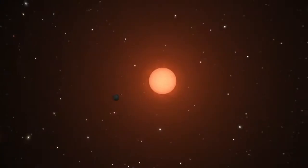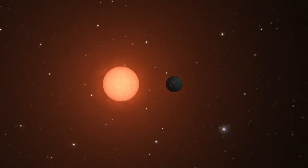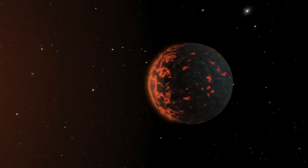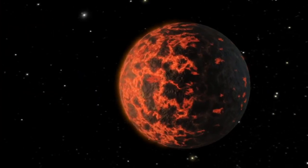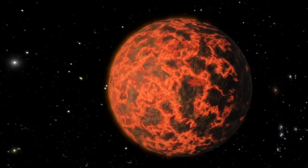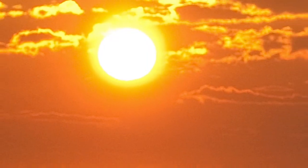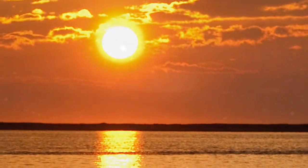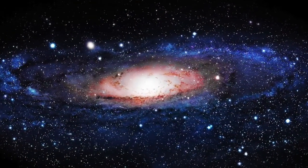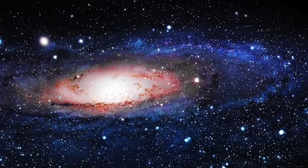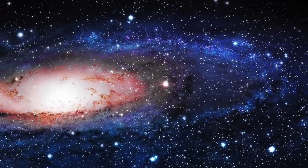Our solar system contains eight planets, three dwarf planets, and many other bodies all orbiting our Sun. Our Sun is one of over 200 billion stars orbiting the center of our galaxy, and our galaxy is one of billions of galaxies in the universe.